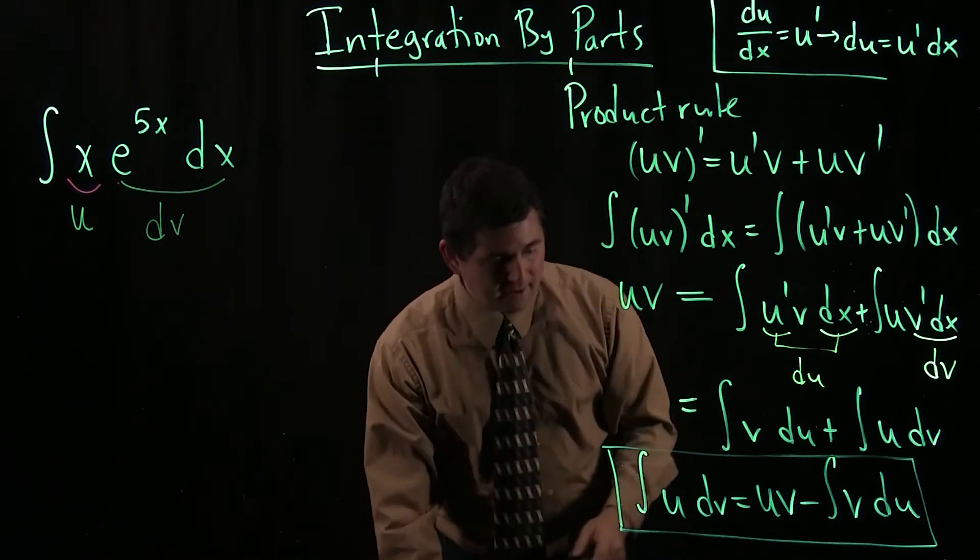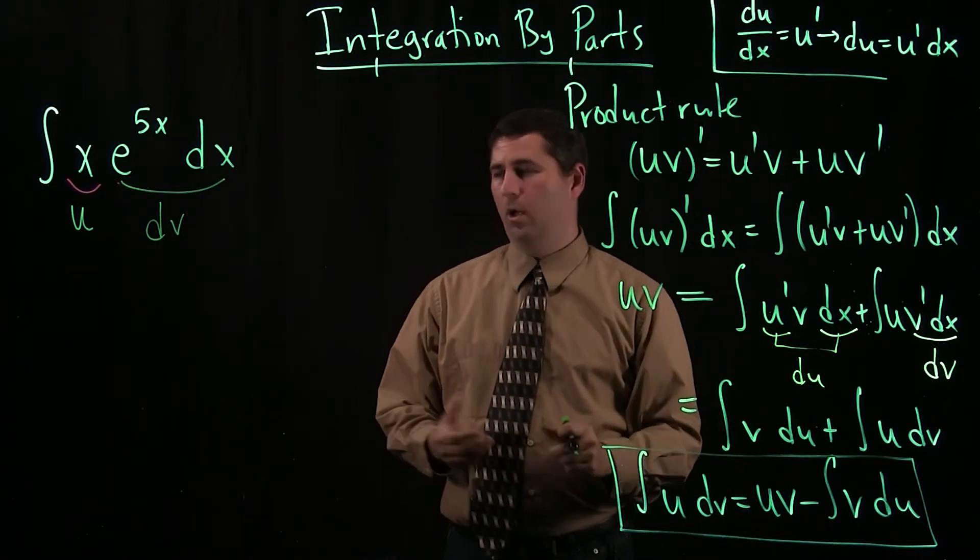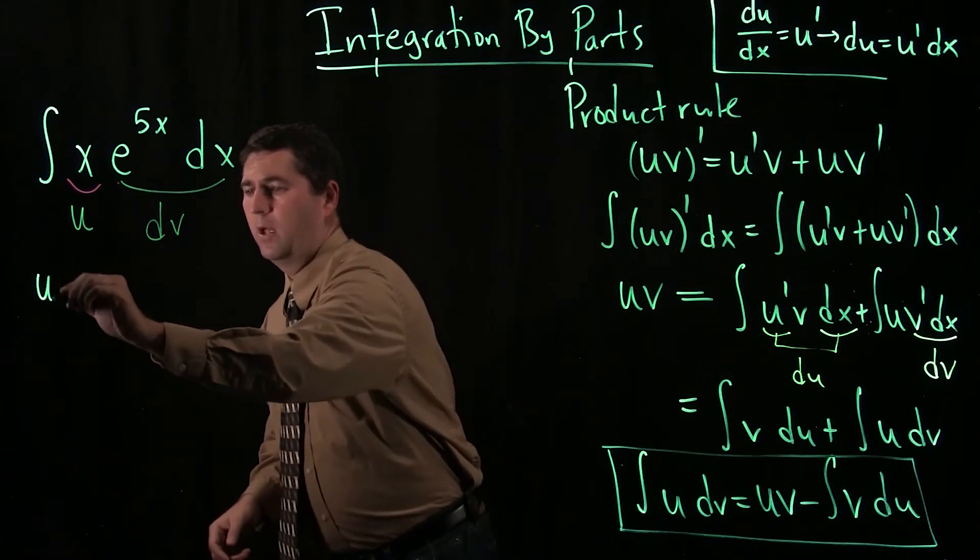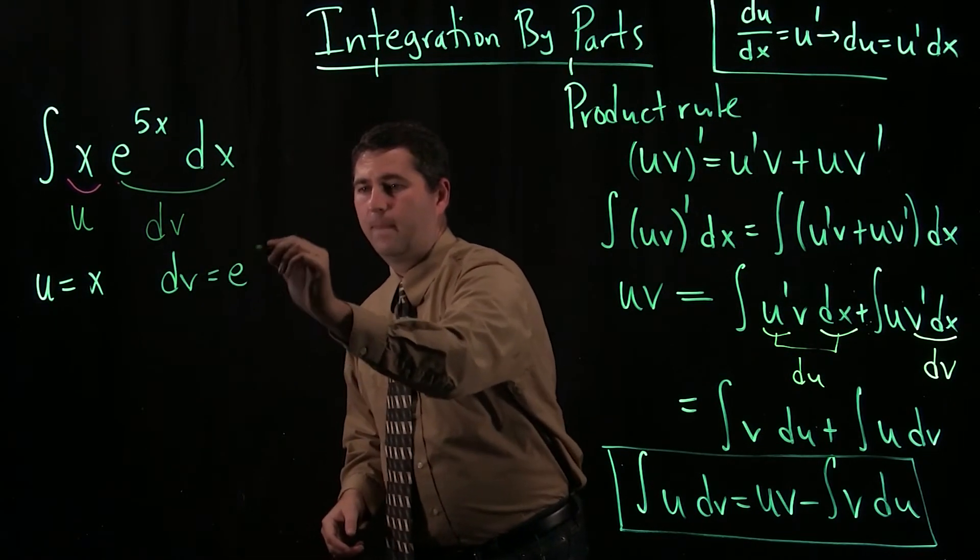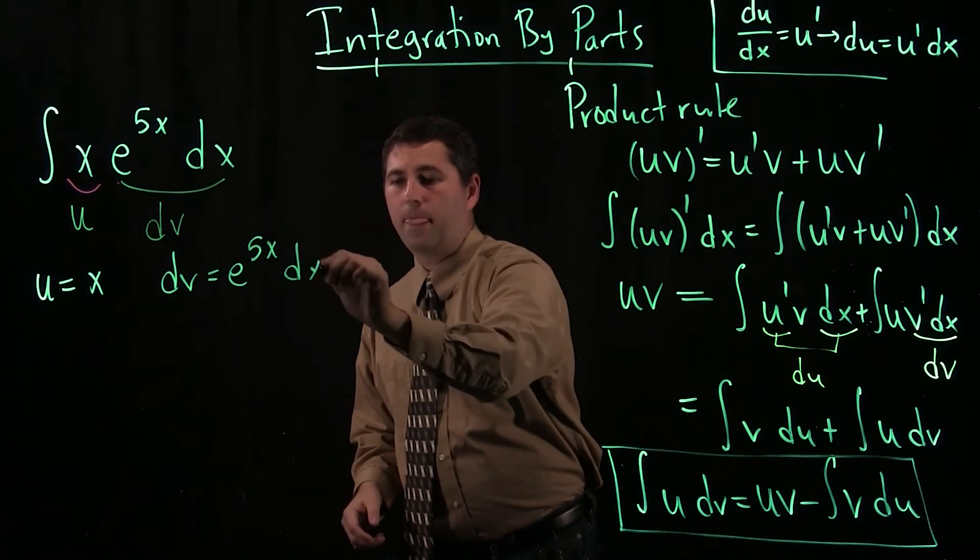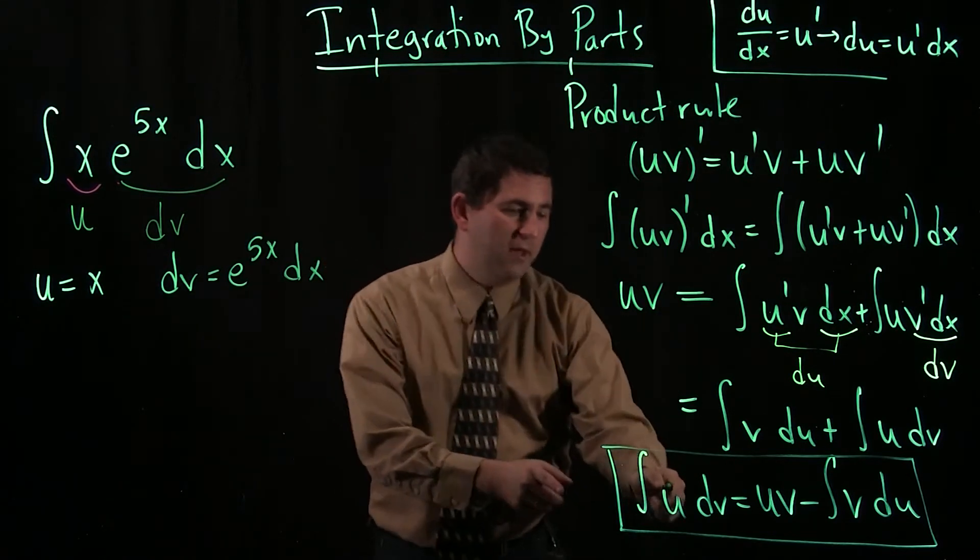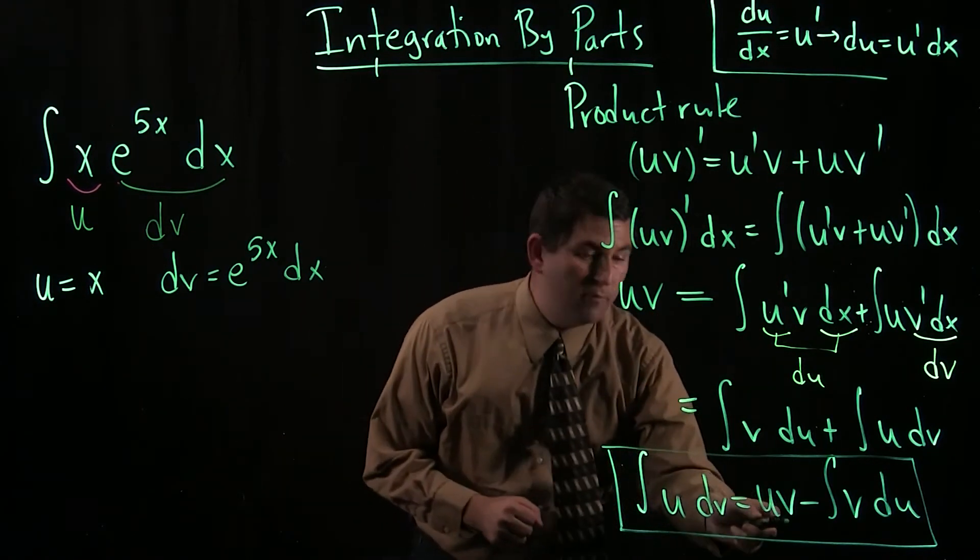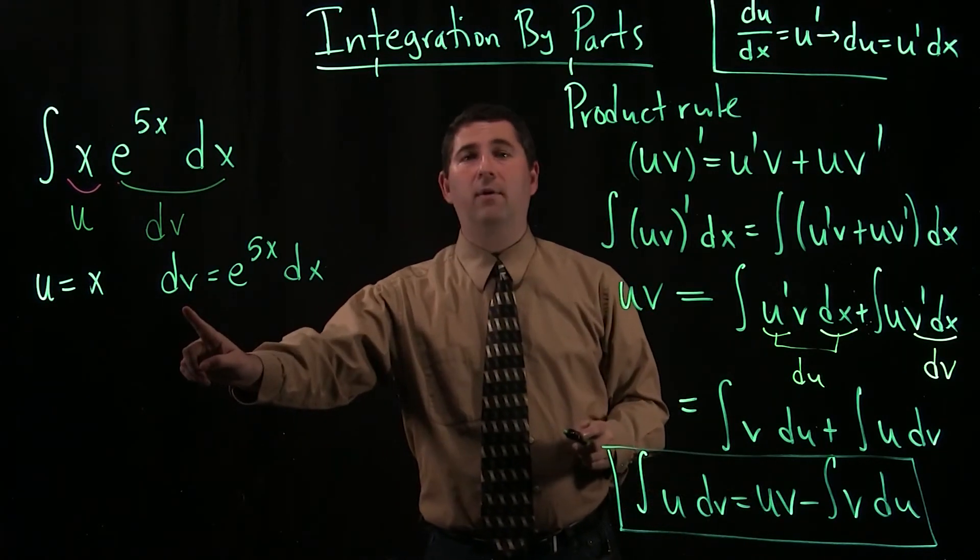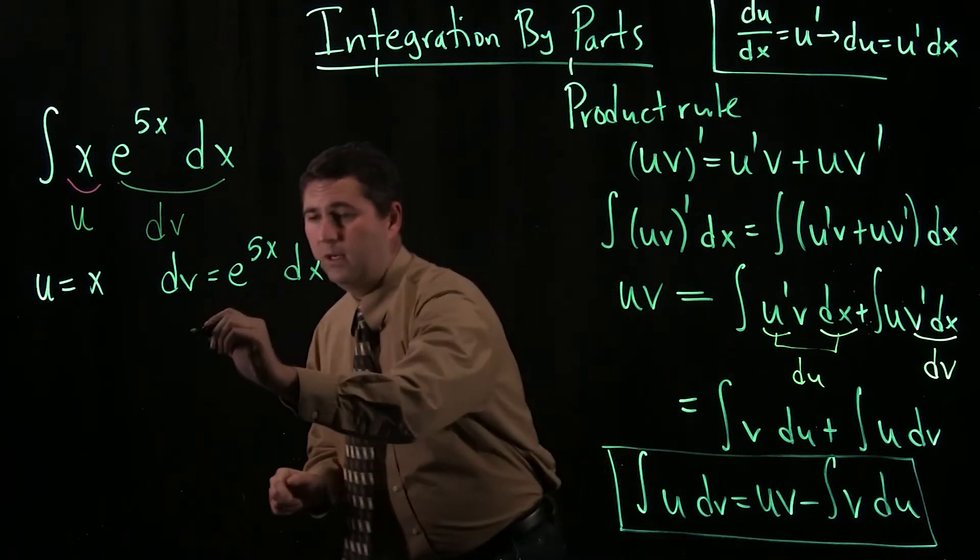Okay, so how does the integration by parts formula work? Well, let's make a little table. We have our u, that's x. We have our dv, that's e to the 5x dx. And now, if I go to the other side of the formula, I need to know u. Hey, I already know u. I need to know v. Ah, I don't have v. I have dv. So, we're going to need to know v.